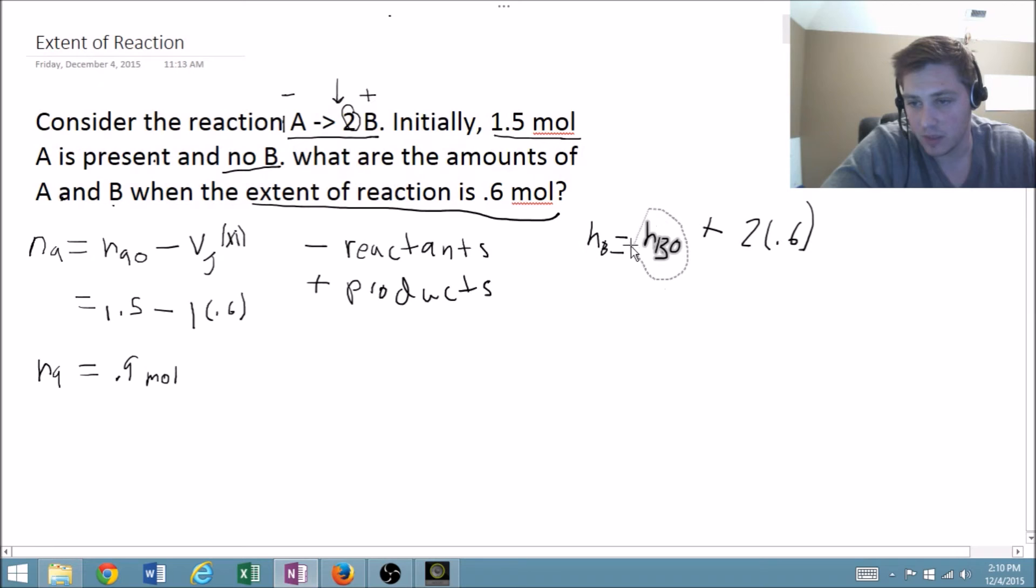This initial is 0 because they tell us here that we have no B. So as you can see, 2 times 0.6 is 1.2 moles. And this is of B.